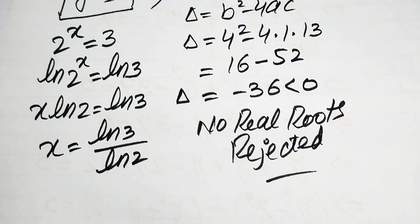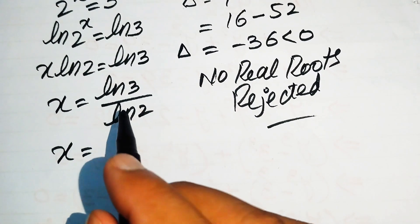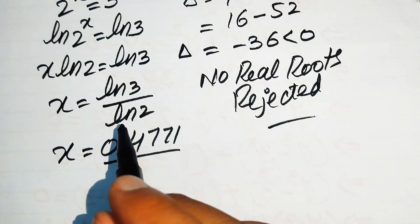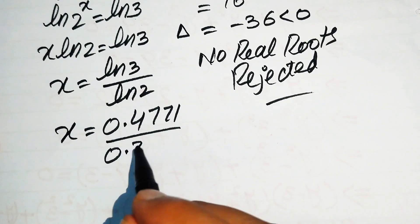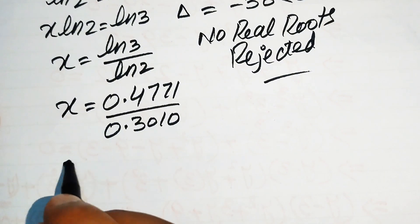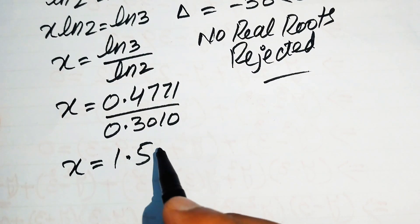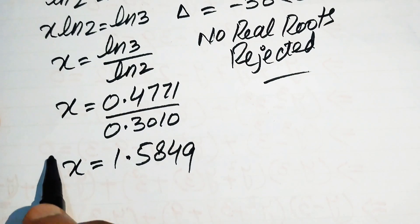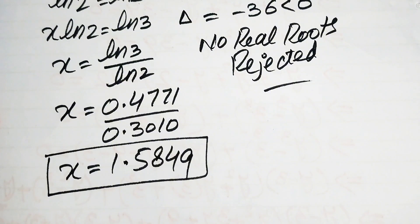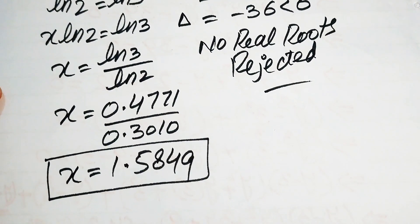Using a calculator or log table, log 3 equals 0.4771 and log 2 equals 0.3010. Dividing these two values gives the final answer x equals 1.5849. This is our final answer. Thank you so much for watching this video. Please subscribe to my channel for more exciting videos.